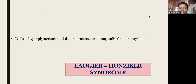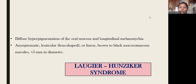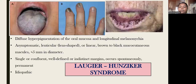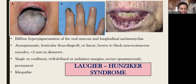Next is Laugier-Hunziker syndrome. It is an idiopathic pigmented syndrome with diffuse hyperpigmentation of the oral mucosa and longitudinal melanonychia. There is hyperpigmentation of the tongue, longitudinal lines on the nails, and perioral pigmentation. They are idiopathic, asymptomatic, 3D lentil-shaped macules less than 5 mm in diameter. They can occur as a solitary lesion or with an indifferent margin, and they are permanent — they will not change with age.